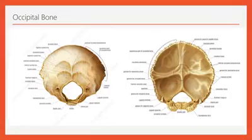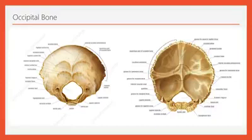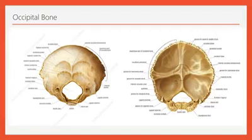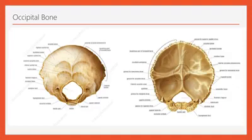Now let's come to the external surface. You have to remember that the midpoint of the external surface is elevated, which is called external occipital protuberance. There are three lines: the highest nuchal line, superior nuchal line, and the inferior nuchal line. The superior nuchal line is along the external occipital protuberance. The importance of this external occipital protuberance: number one, it is an important bony landmark; number two, here the origin of the trapezius muscle is present; number three, here the ligamentum nuchae is present. The trapezius muscle is the muscle of the back of the neck which extends up to the shoulder.